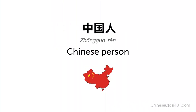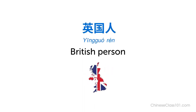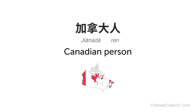Let's review the key vocabulary. 中国人 — Chinese person. 英国人 — British person. 加拿大人 — Canadian person.